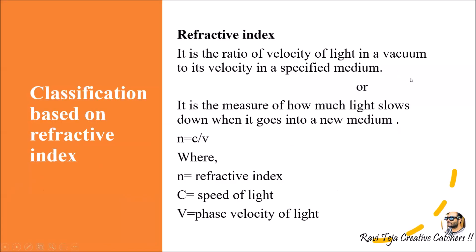Now, looking at refractive index — we have seen the layers of the optical fiber cable. The first one was the core, the second one was the cladding. The core is noted as refractive index n2 and cladding is noted as refractive index n1, where n2 is always greater than n1. The refractive index of the core is always greater than the refractive index of the cladding.